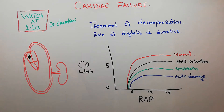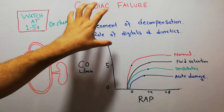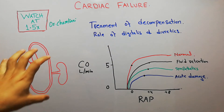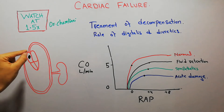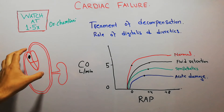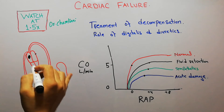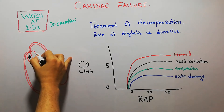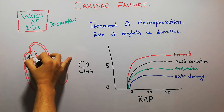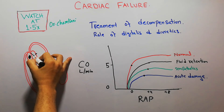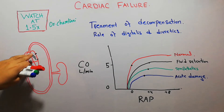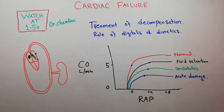When heart failure occurs acutely, most of the time it is due to ischemic heart disease — when ischemia occurs due to blockage of some blood vessel supplying blood to different parts of the heart. For example, if a part of the heart is receiving blood from a vessel and that vessel is blocked, acute heart failure will occur and it will have some acute and chronic effects.